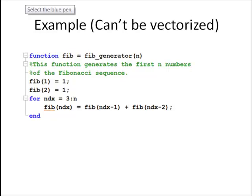So here's an example of a MATLAB function that involves a for loop that can't be vectorized. This function generates the first n numbers of the Fibonacci sequence. Here we've assigned the first two elements to be equal to 1. Remember the Fibonacci sequence is 1, 1, and then the next element is 2, equal to the sum of the previous two elements.